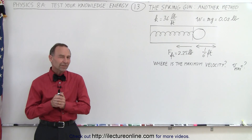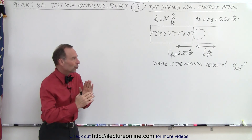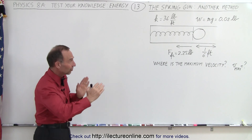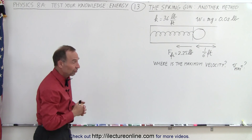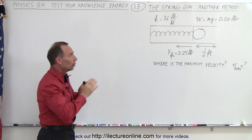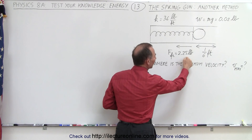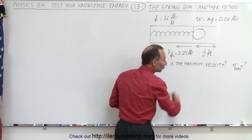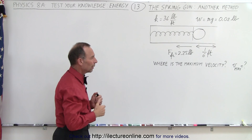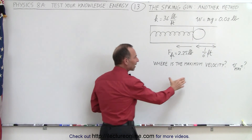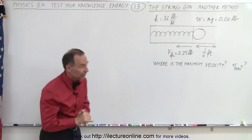Welcome to my lecture online. Now let's take another look at this spring gun problem, where we push a ball with a weight of 0.02 pounds against the spring inside the barrel. The spring constant is 36 pounds per foot. We let go, and remember there's a friction force inside the barrel of 2.25 pounds pushing against the bullet in the opposite direction. We're supposed to figure out where the maximum velocity is, at what point it occurs, and what that maximum velocity is.